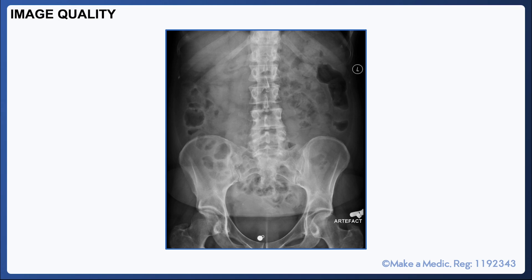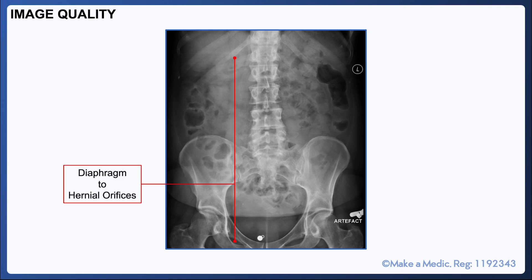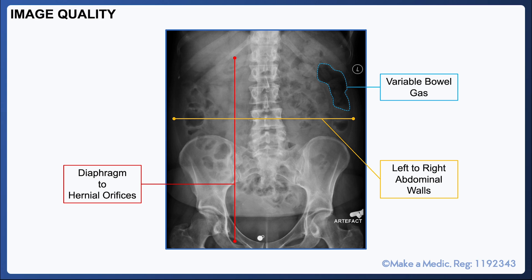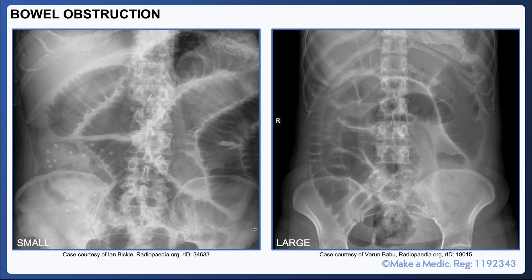With regards to image quality on abdominal x-rays, you want to see everything from the diaphragm to the hernial orifices, and in the horizontal plane the left and right abdominal walls. It's important to note that the bowel gas pattern is very variable. Bowel obstruction is one of the main indications for an abdominal x-ray; often patients will require a CT scan to identify the transition point, determine the cause, and plan surgery, however abdominal x-ray is often more readily available in the first instance. There are a few key differences between small bowel obstruction and large bowel obstruction on an x-ray.